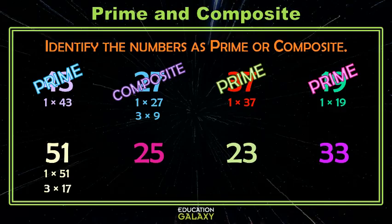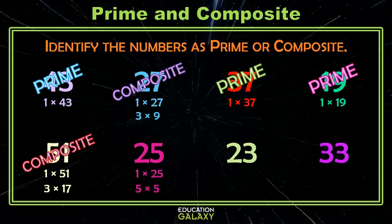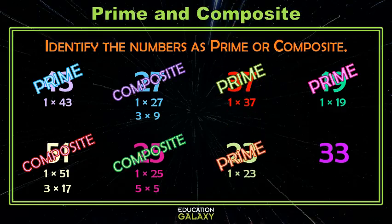We know 3 is a factor of 51 because of divisibility rules, right? You remember. So that one's composite. 25 has 1 and 25. It also has 5 and 5, which makes it composite. And 23 — 1 and 23. I can't think of anything else, so 23 gets a prime stamp.